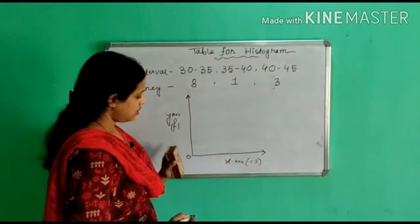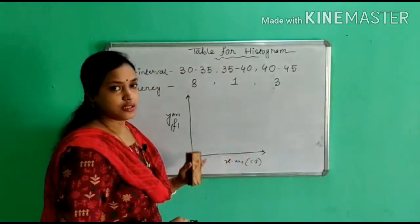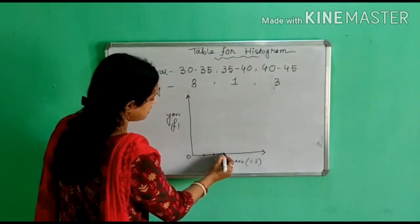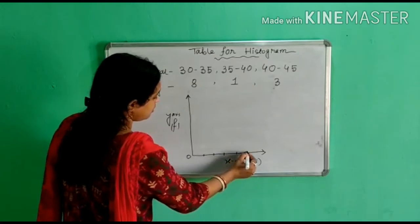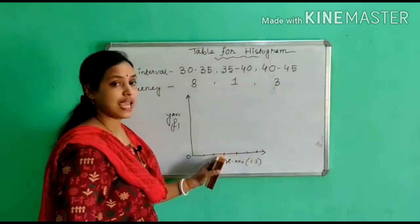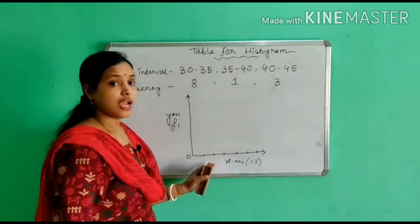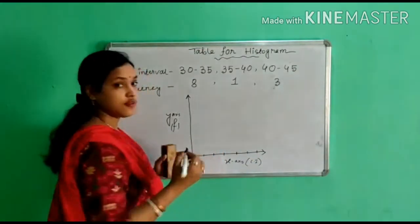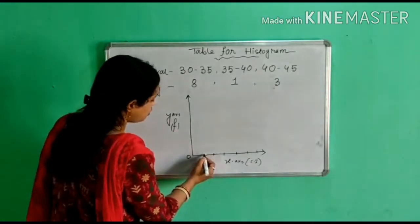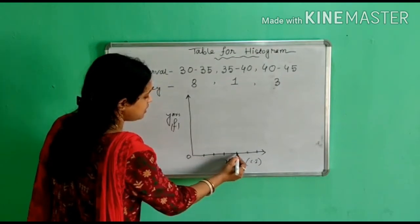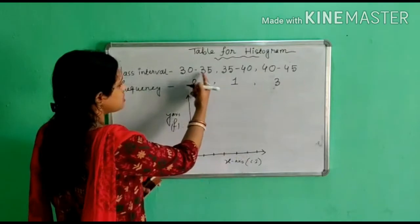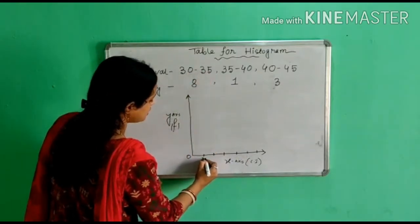Now I'm going to mark here in a horizontal line. I'm going to mark here one centimeter. You have to mark this one centimeter gap in horizontal line with the help of scale. I'm just giving you an example how to draw a histogram. So here you mark one centimeter gap for class interval. Our class interval started from 30 to 35, so here I'm going to write 30.